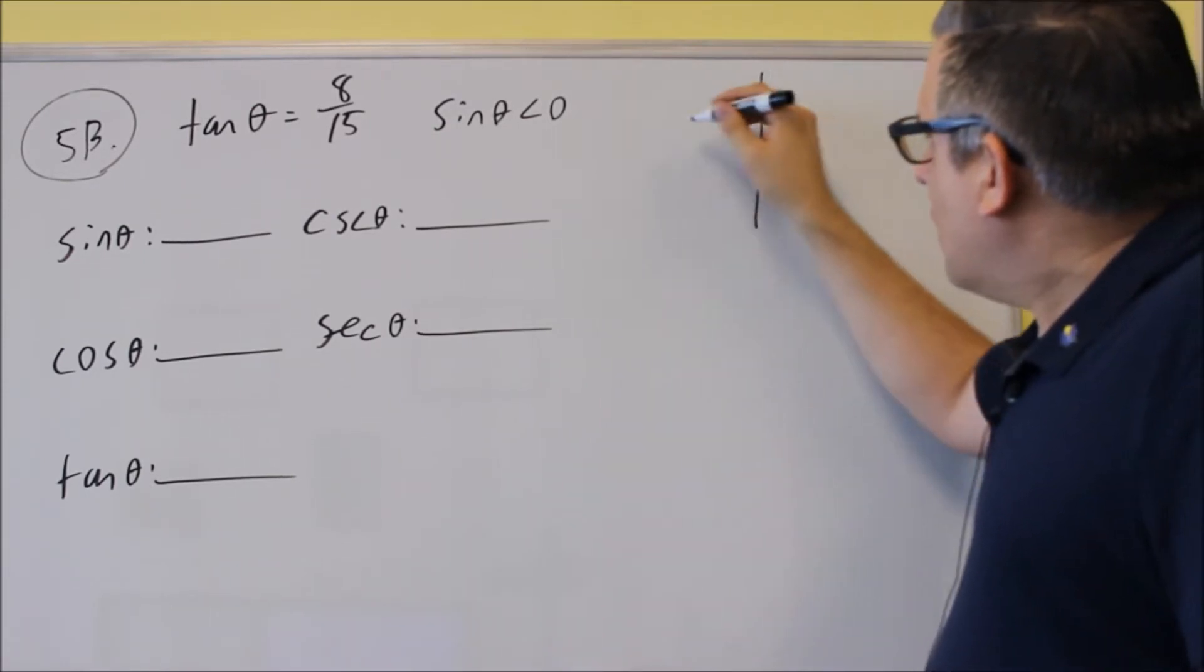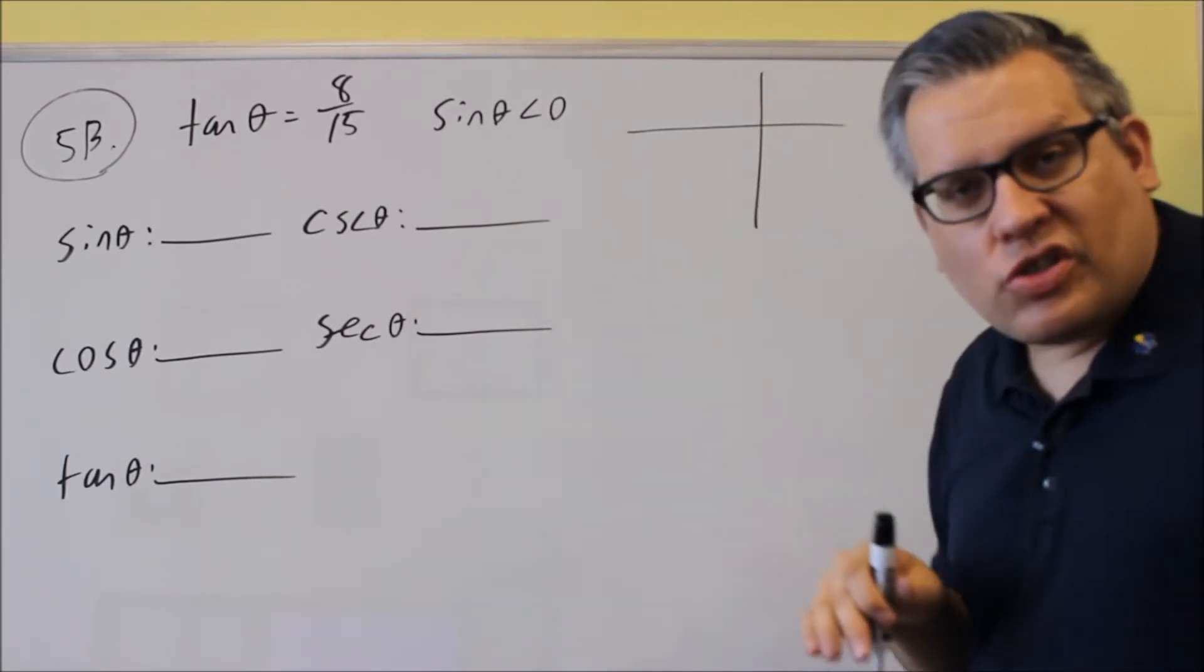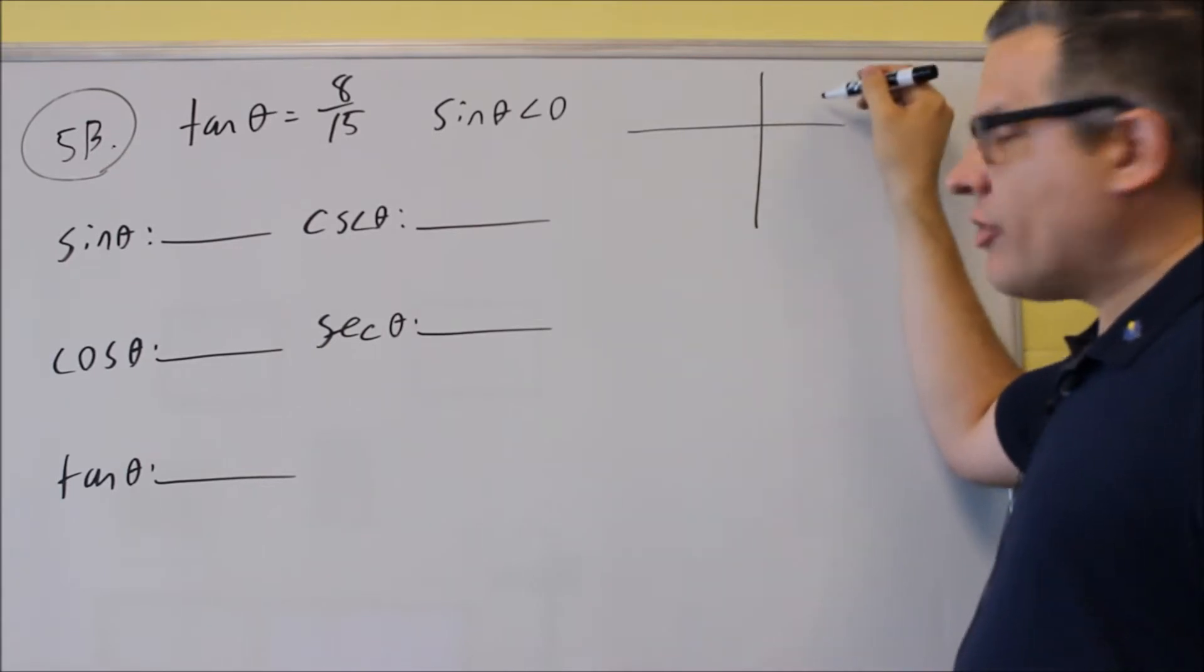So when we draw something like this, we want to go around all the quadrants. We want to use all students take calculus to figure out what sign it's in. All means everything's positive in the first quadrant.